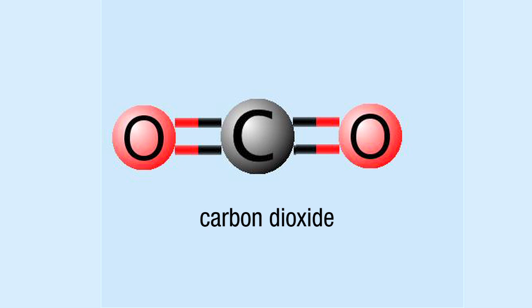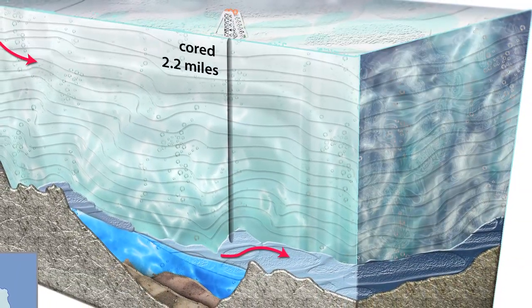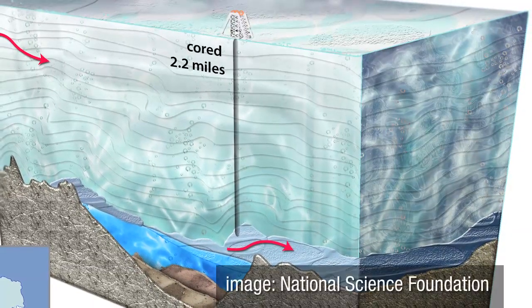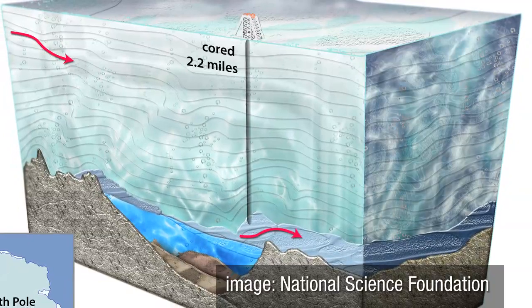The best evidence that I know of that shows how carbon dioxide is varying in the atmosphere of the Earth comes from an ice core that was dug in Antarctica. It's called the Vostok ice core. It was drilled in a frozen lake. Scientists extracted a core of ice, and in that ice there were small little bubbles of air that were trapped.